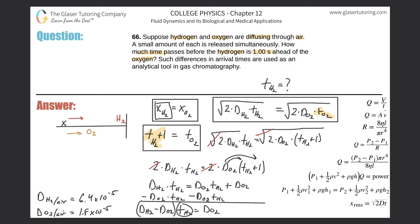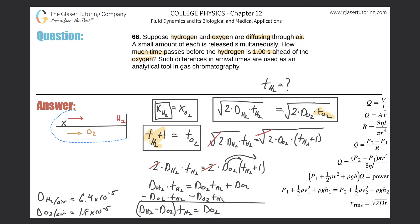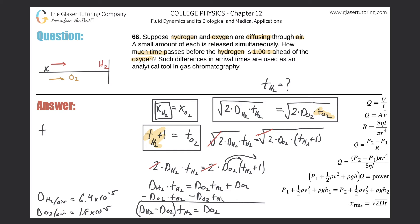Now to solve for t(H₂), all we have to do is divide out the constant (D(H₂) − D(O₂)) from both sides. So we're left with: t(H₂) = D(O₂) / (D(H₂) − D(O₂)). This is the final expression for the time it takes hydrogen to reach its location.